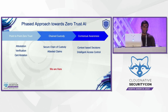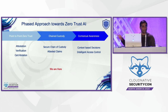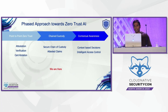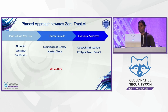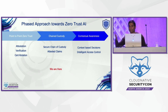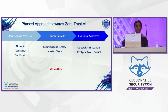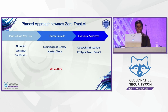NIST AI-RMF is a good reference — they do call for some Zero Trust. What is the path for Zero Trust for AI? We could start with point-to-point Zero Trust, establish Zero Trust foundation principles, and then go to the next level: chained custody. That's what I'm going to talk about today — chained custody and how you can incorporate contextual awareness. I'll be rushing through the next slides because I want to get to the demo.